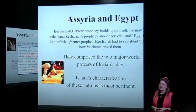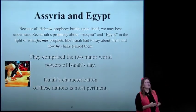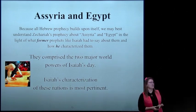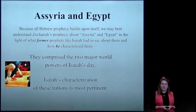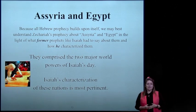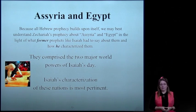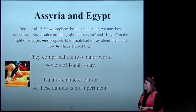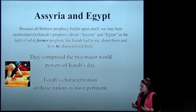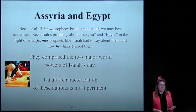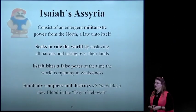The scepter of Egypt shall depart away. So we're going to take a close look at the symbols of Assyria and Egypt in Isaiah's day so we can accurately figure out who they might represent in our day. Because all Hebrew prophecy builds upon itself, we can best understand Zechariah's prophecy about Assyria and Egypt in light of what former prophets like Isaiah had to say about them. They comprise the two major world powers of Isaiah's day.